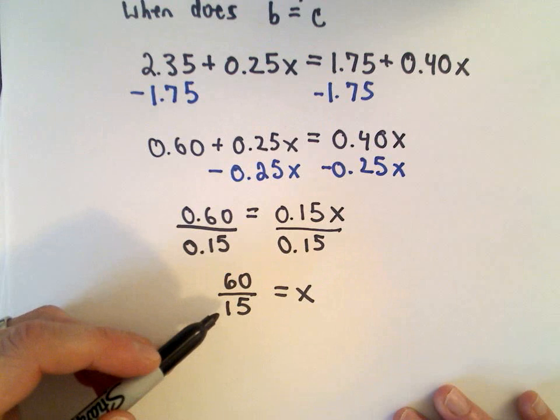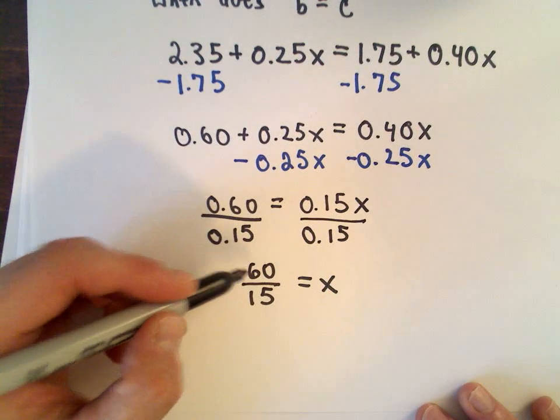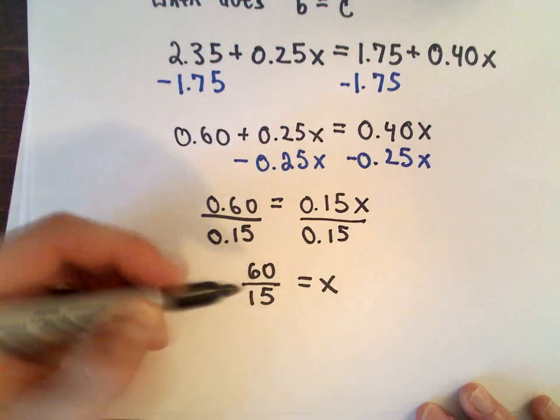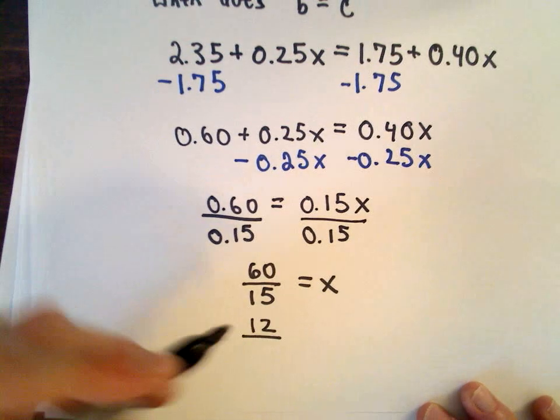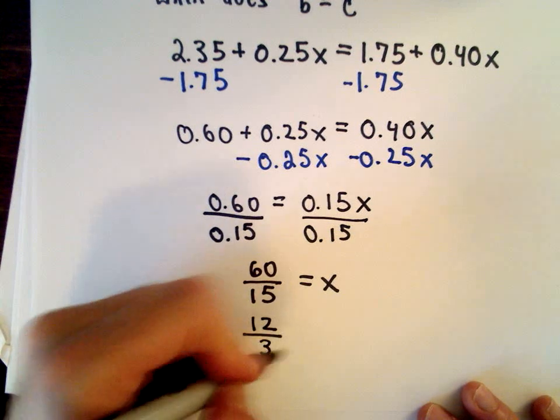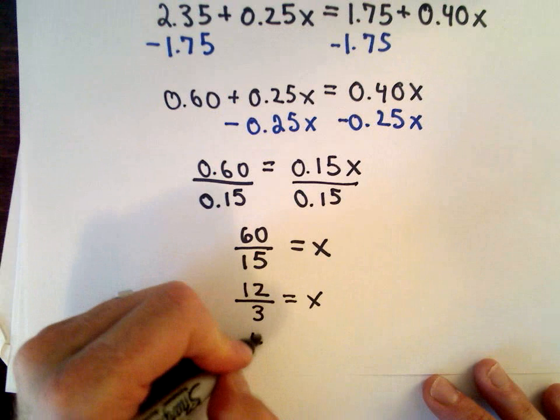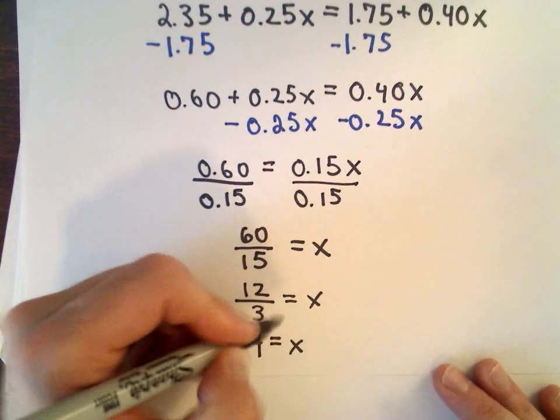Maybe you can do the arithmetic here. If you're not sure, you can start simplifying. Let's see, five goes into sixty twelve times, five goes into fifteen three times. Well, that still simplifies further - twelve divided by three would give us four, that equals x.